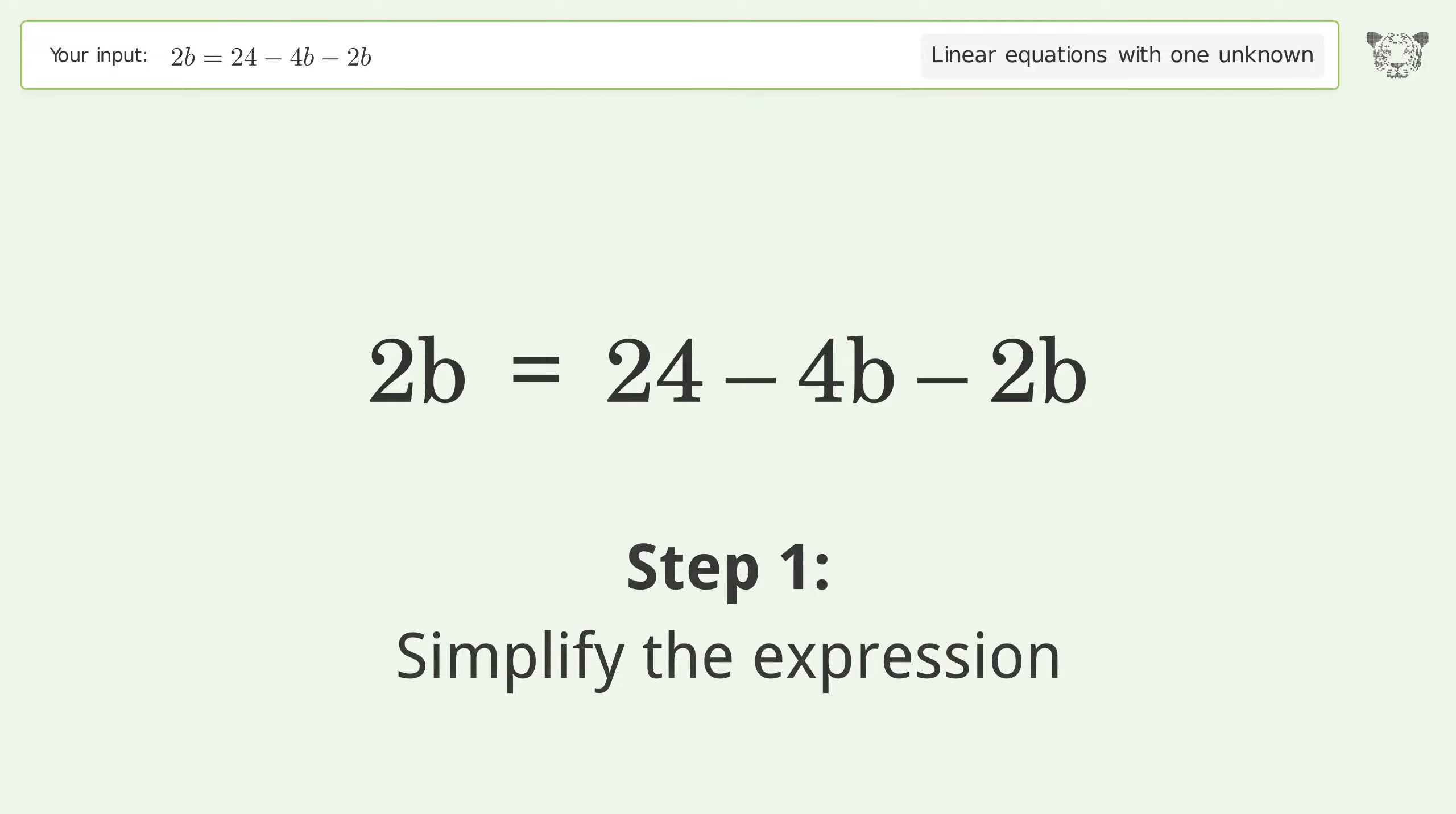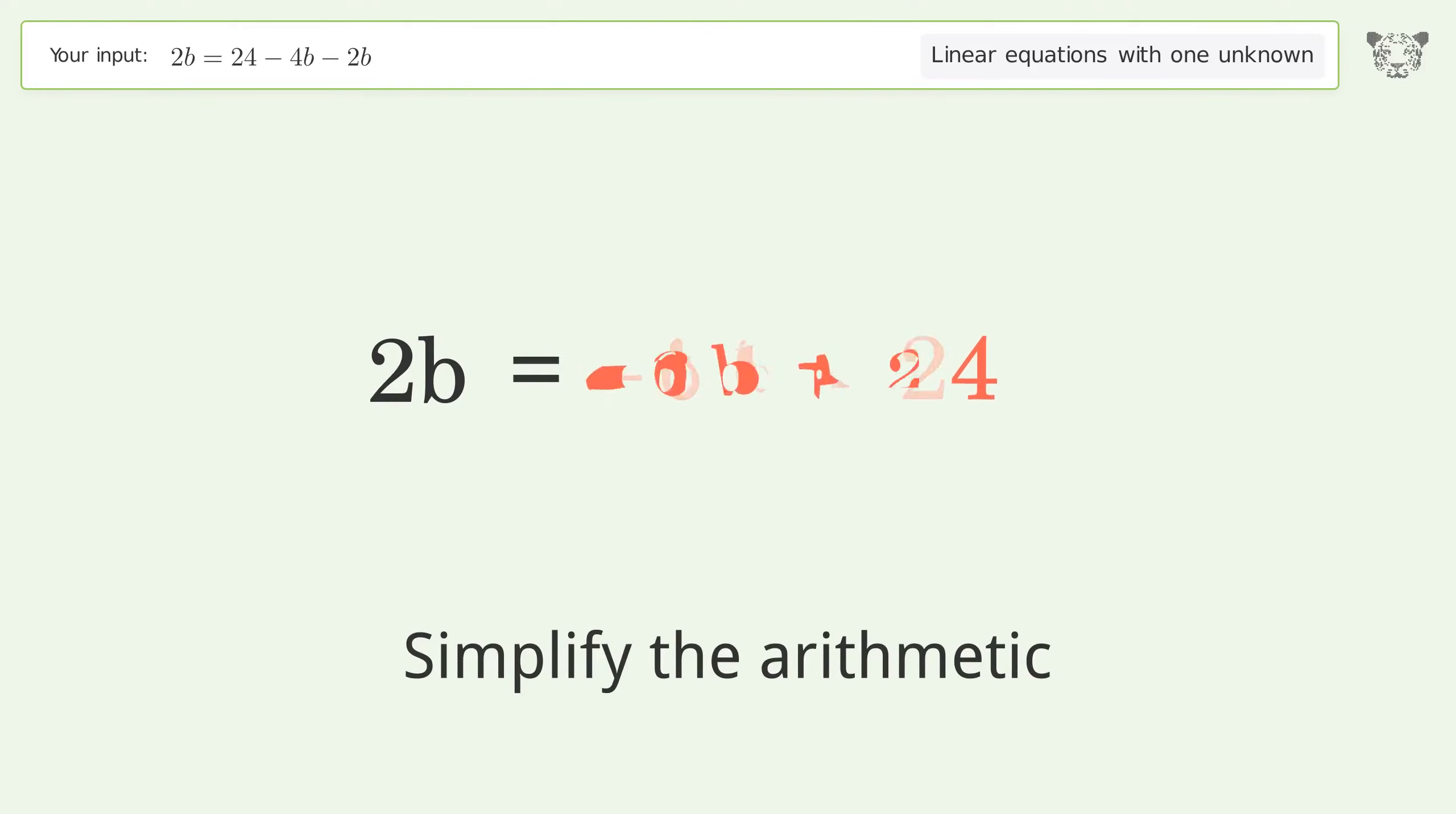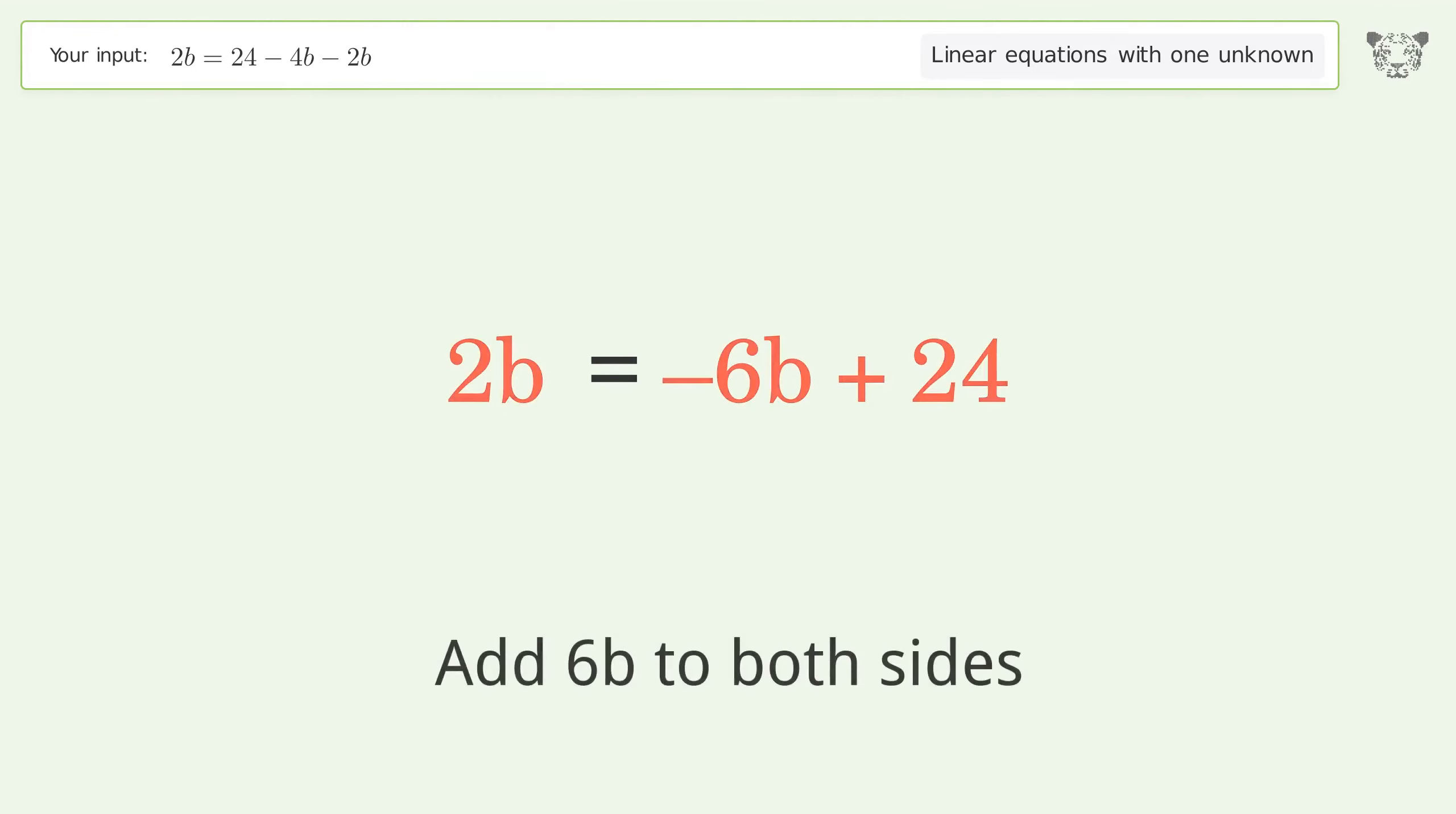Simplify the expression. Group like terms. Simplify the arithmetic. Group all b terms on the left side of the equation. Add 6b to both sides.